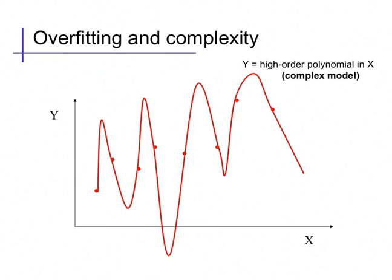On the other hand, here's a very different explanation of the same points. We're supposing that the relationship between x and y is some very complicated function. And because this function actually touches all of the data points exactly, we don't need to explain any uncertainty or misses in our predictions using noise. So this would be a noise-free or nearly noise-free model.